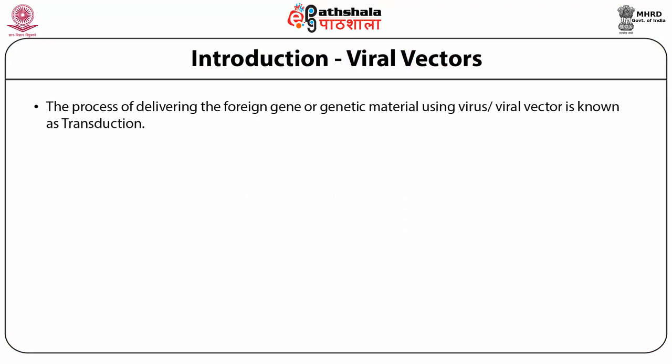Plant virus expression vectors, which have been engineered to generate vaccines and other pharmaceutical proteins, are predominantly derived by modifying genomes of viruses like tobacco mosaic virus, potato virus X, cauliflower mosaic virus, etc. Indeed, plants represent a safe, efficacious, and inexpensive production platform to produce vaccines and other therapeutic proteins for the world's poor. The process of delivering foreign genes or genetic material using a virus or viral vector is known as transduction.